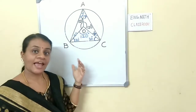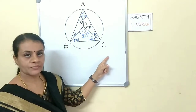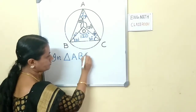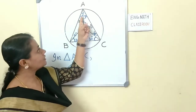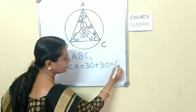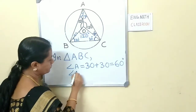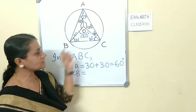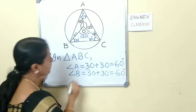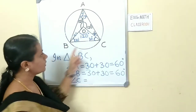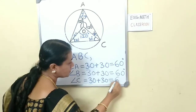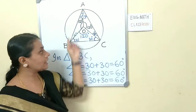So what are the angles of triangle ABC? In triangle ABC: angle A equals 30 plus 30, which is 60 degrees. Angle B equals 30 plus 30, which is also 60 degrees. Angle C equals 30 plus 30, which is again 60 degrees. All angles of triangle ABC are equal.